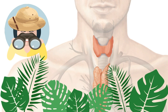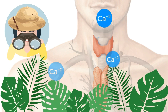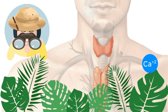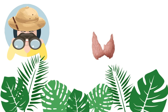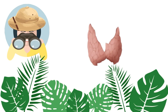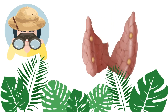The thyroid gland does produce hormones that regulate blood calcium levels, but that's not what we're looking for. The tiny endocrine glands that we're on the hunt for here are on the back of the thyroid gland — the parathyroid glands.